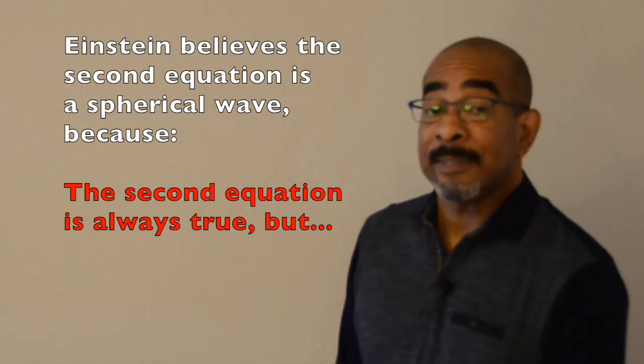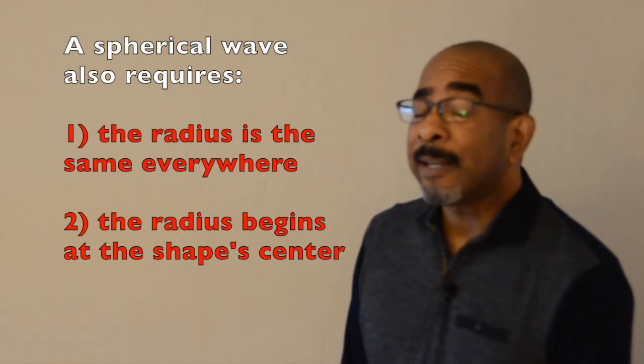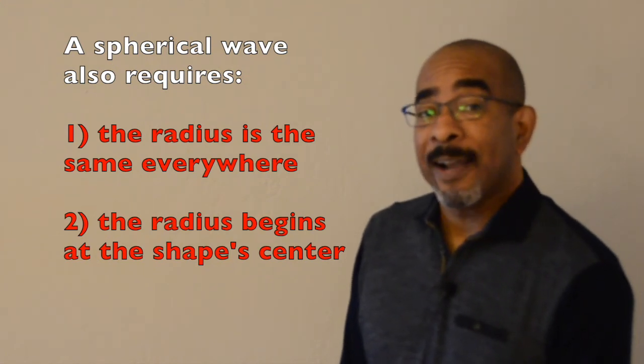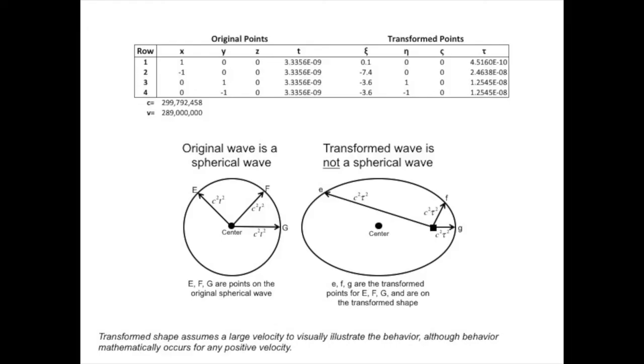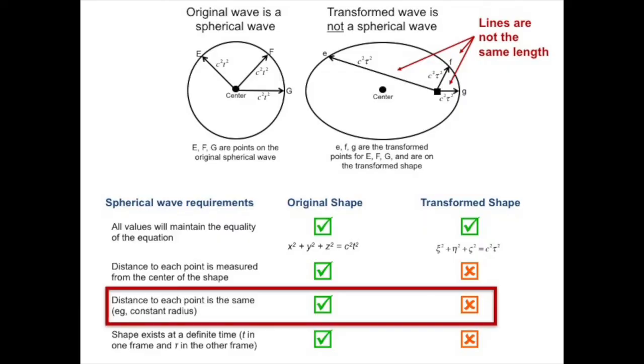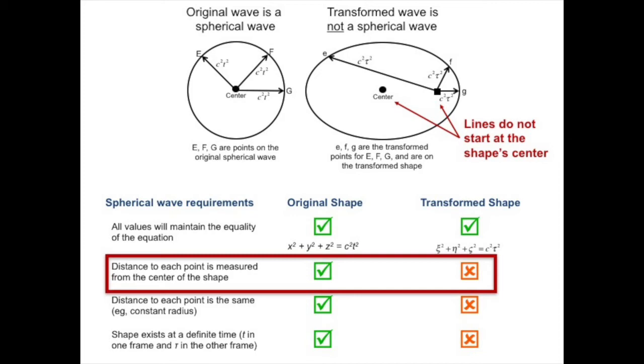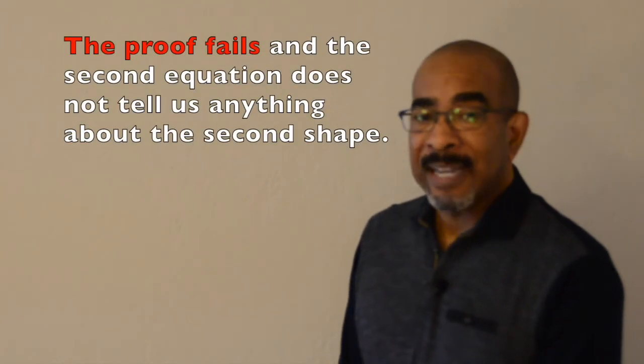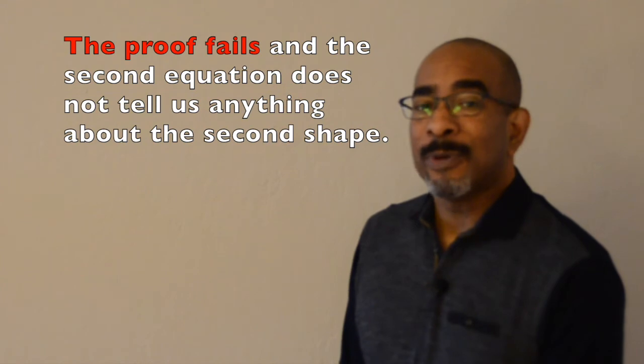If you just examine it quickly, you're going to assume that it is. However, we have to look at it a little bit more deeply, and the best way to do that is to convert Einstein's points and draw the picture. Once we do that, we make several important discoveries. The first discovery is that the lengths of the line segments are not the same. That would be a mistake because a spherical wave requires that all points share the same radius. In Einstein's transformed shape, they do not. A second requirement is that all of those lengths originate at the shape's center. While it's true all of these lengths in the transformed shape originate at the origin, the transformed shape center is no longer at the origin, so that creates a second problem. For both reasons, Einstein's transformed shape is not a spherical wave.